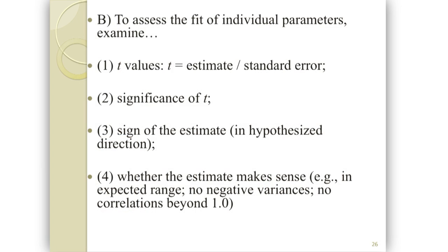Then there's assessment of fit at the parameter level. For each free parameter we get a t-value — essentially the estimate divided by the standard error — and a p-value, so we know if each free parameter is statistically different from zero.